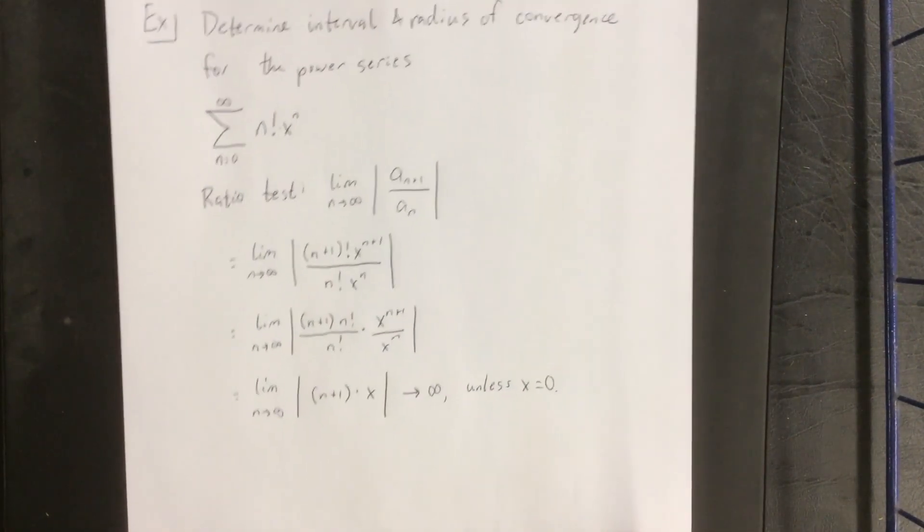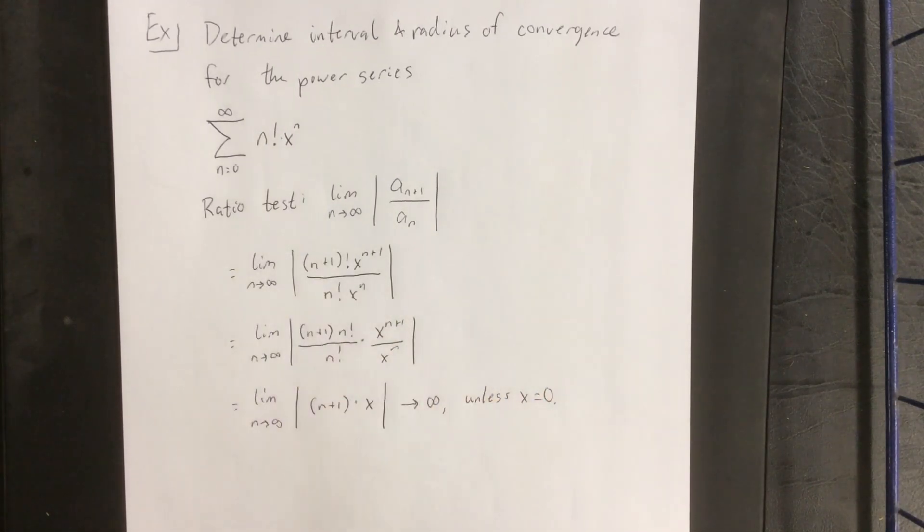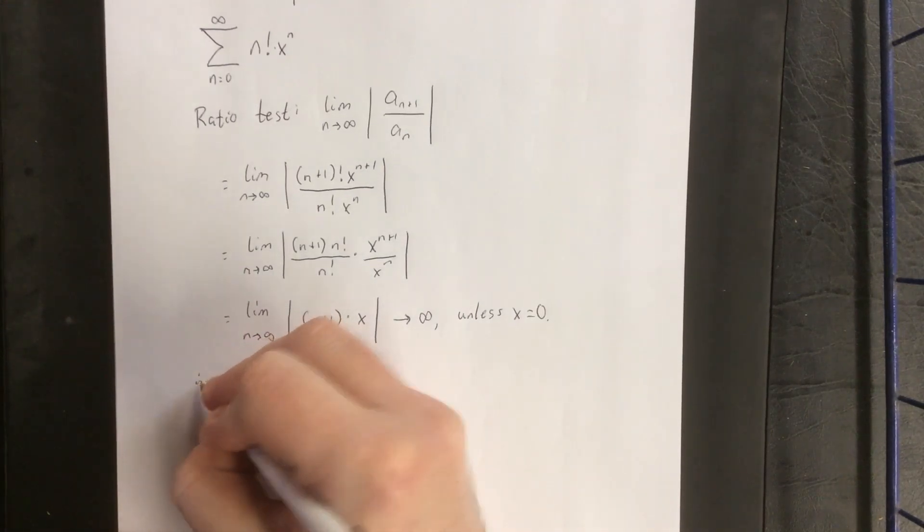Now, you'll notice also that x equals 0 was the center of this power series. So, of the three possibilities, what this lets us know is that the series converges.